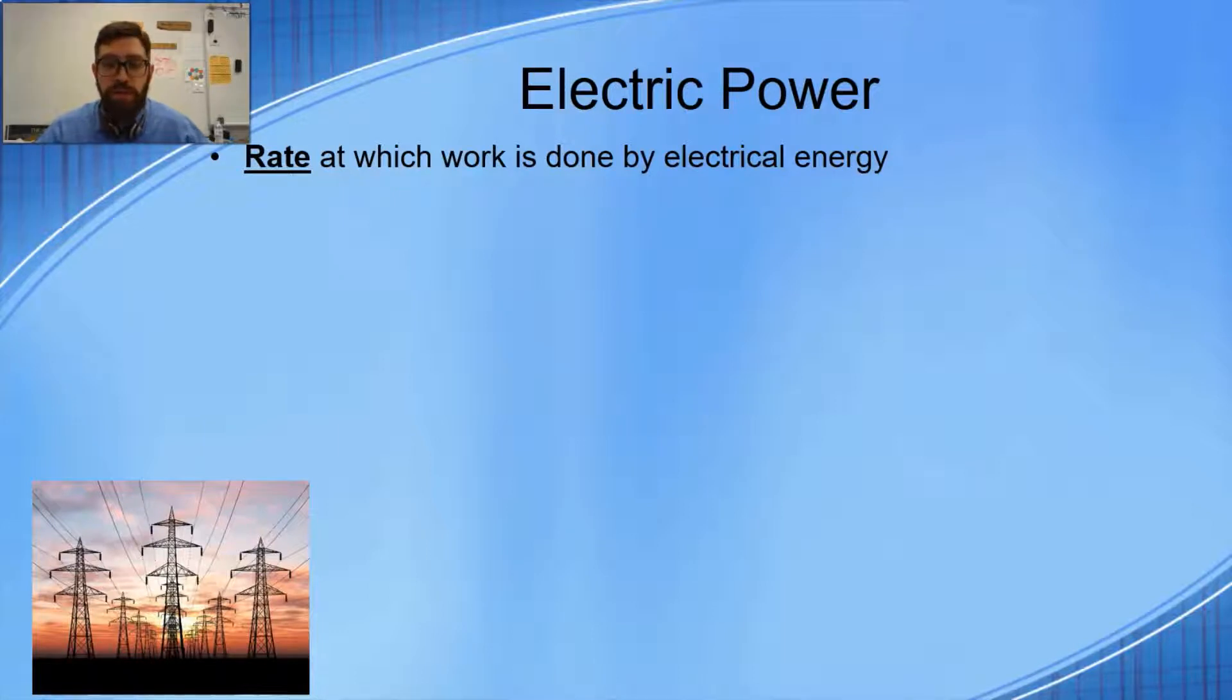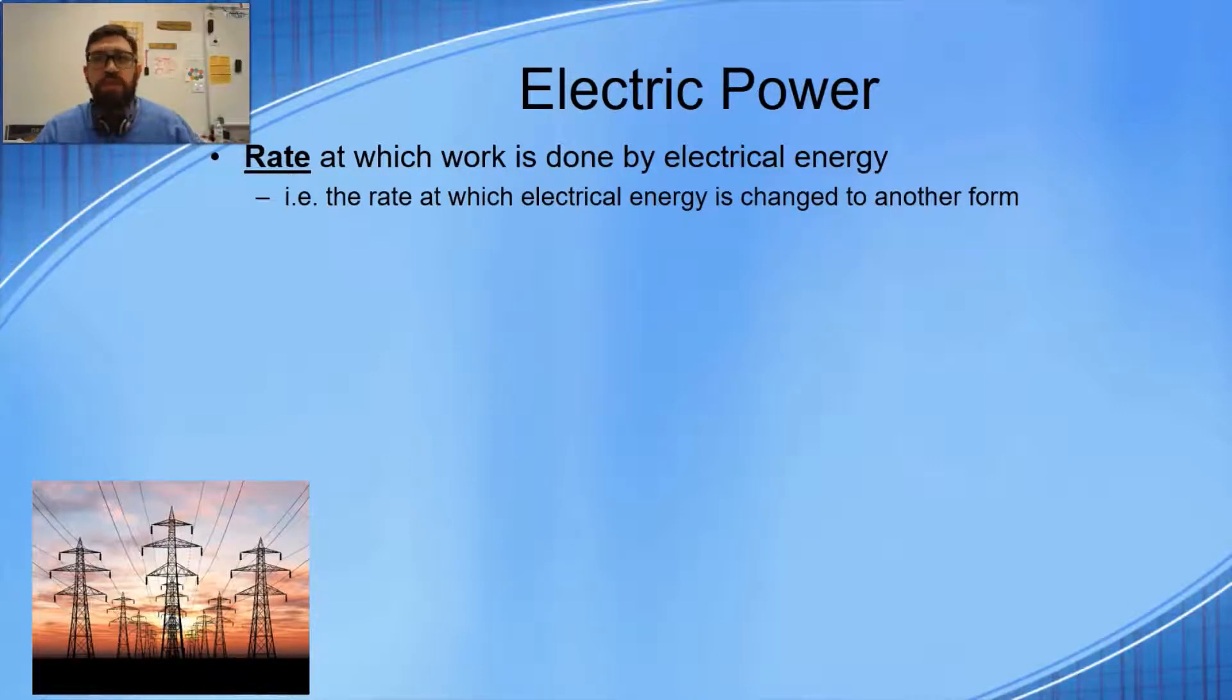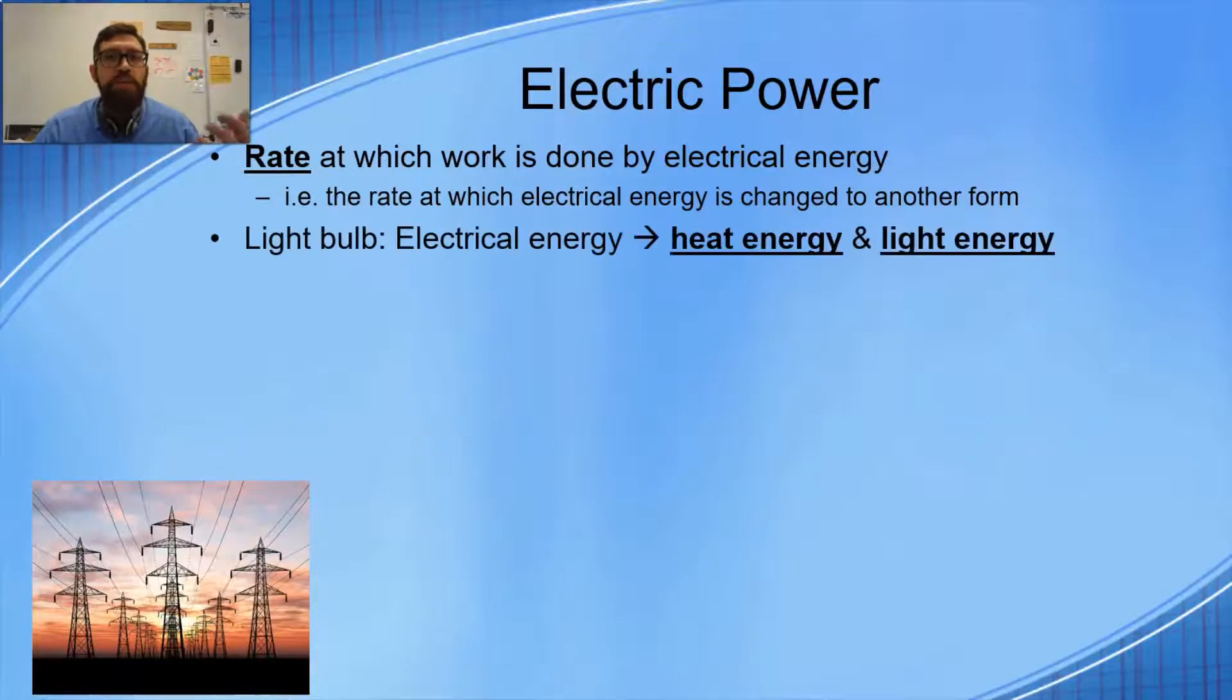So electrical energy is doing work. And remember, work is just a change in energy. So what we're really talking about is the rate at which electrical energy is being changed to another form. The unit for power is watts. In the first place, you probably saw the word watts with light bulbs. So when we're talking about a light bulb, what's happening is that electrical energy is being transformed into heat energy and a lot of light energy.